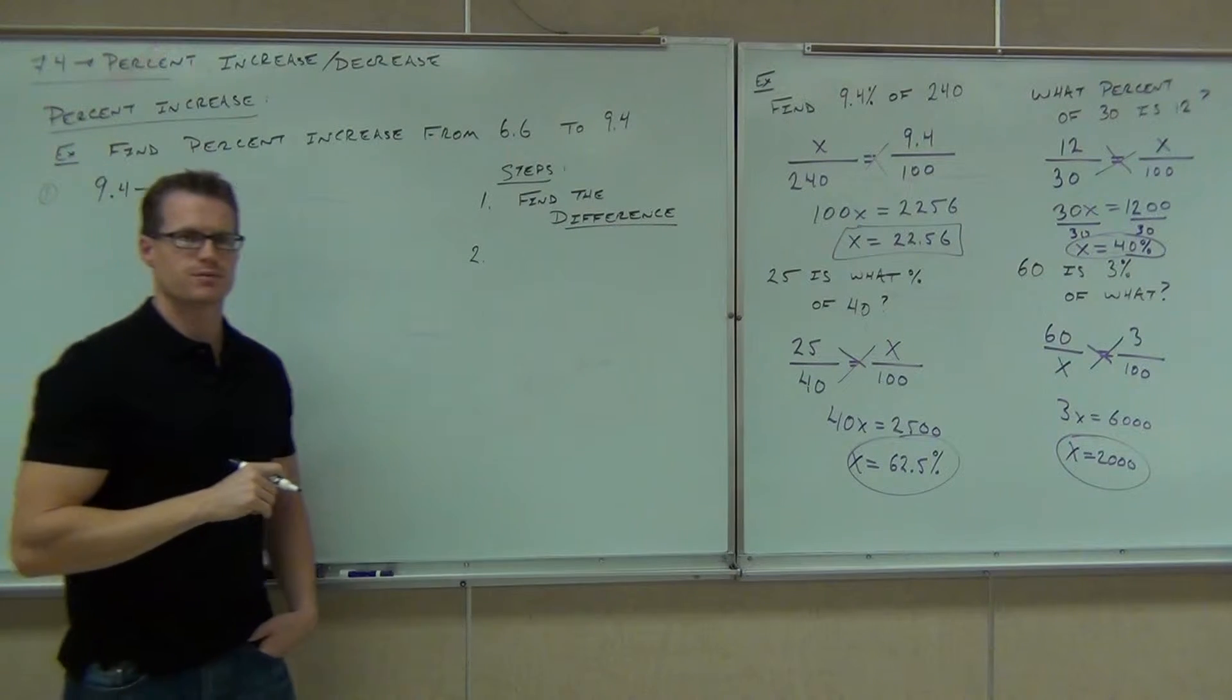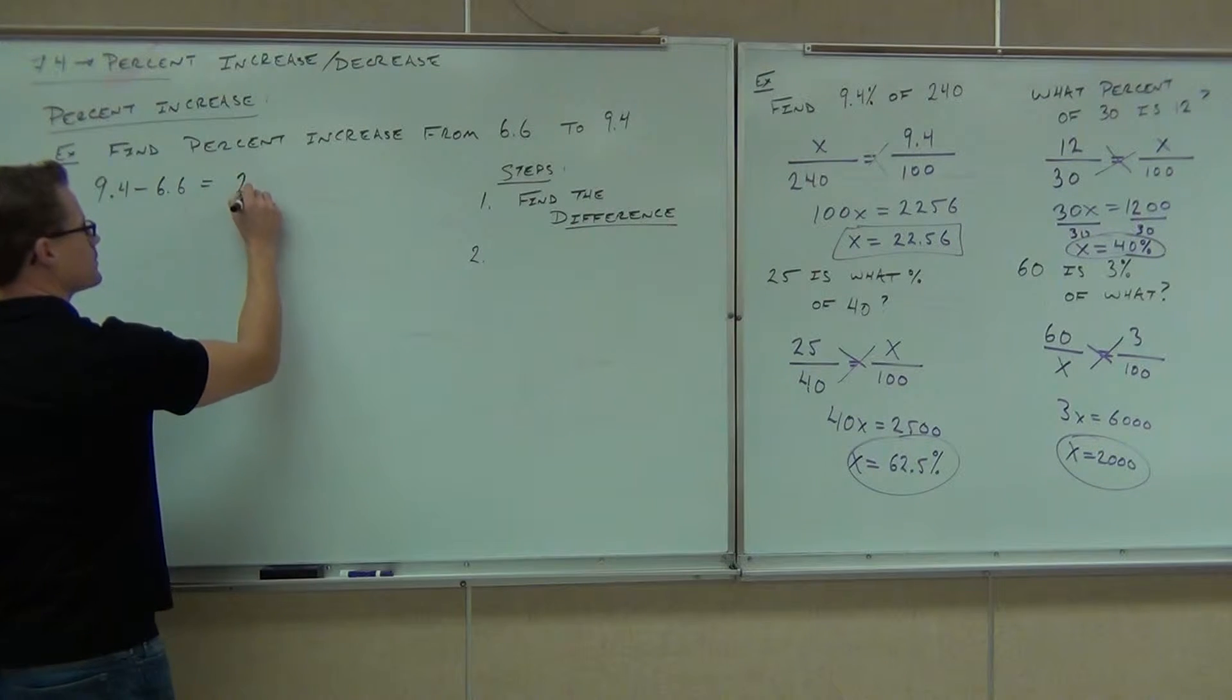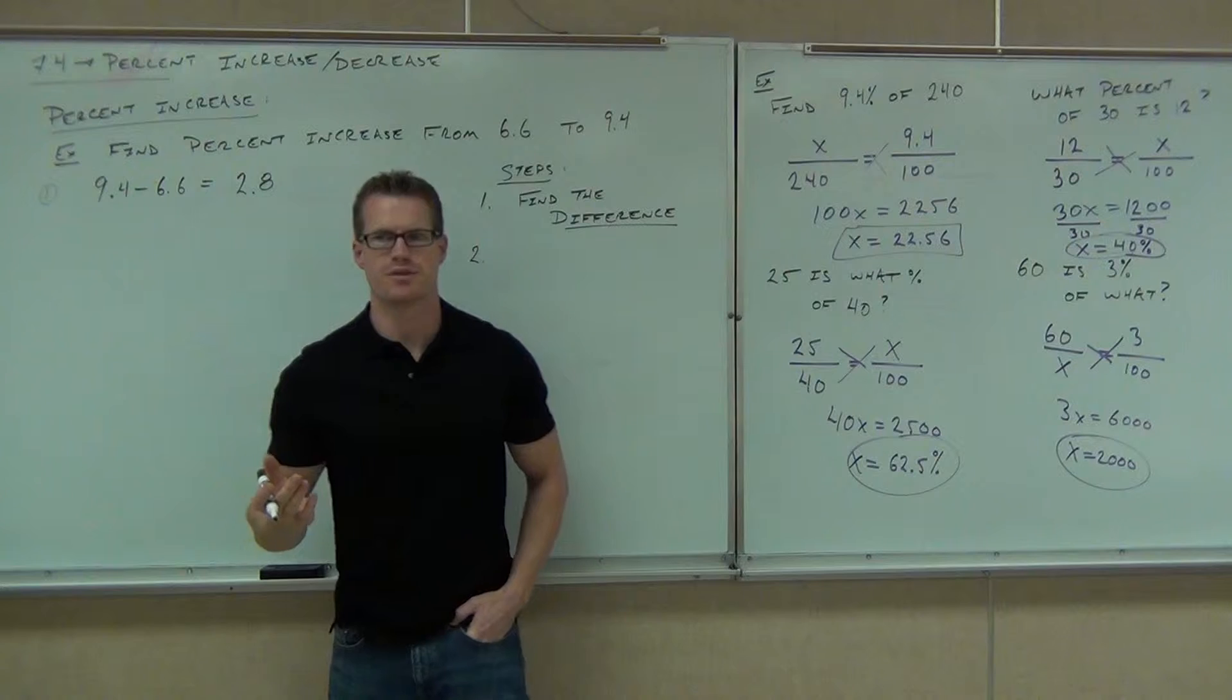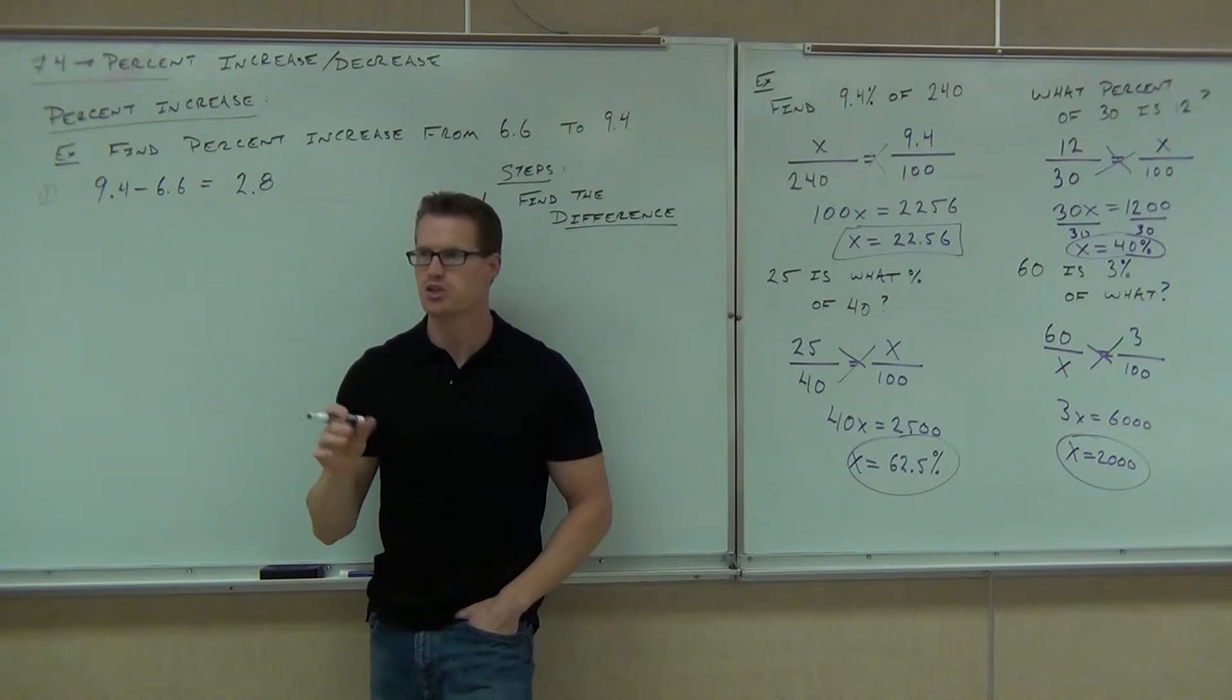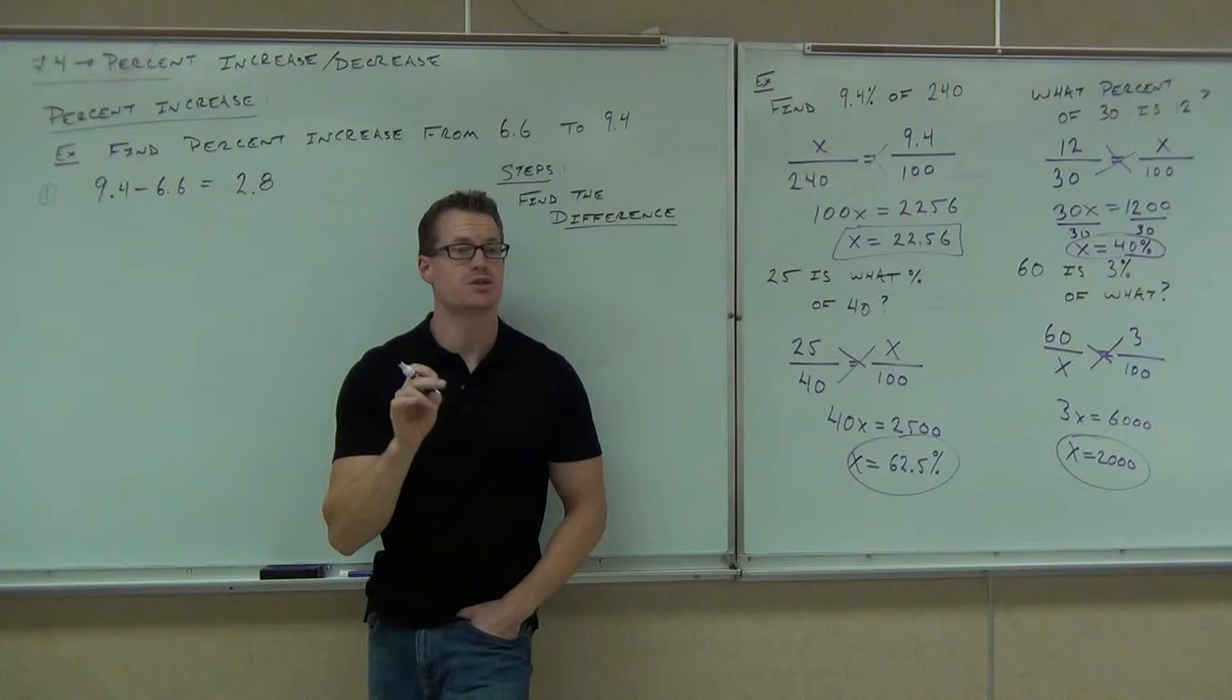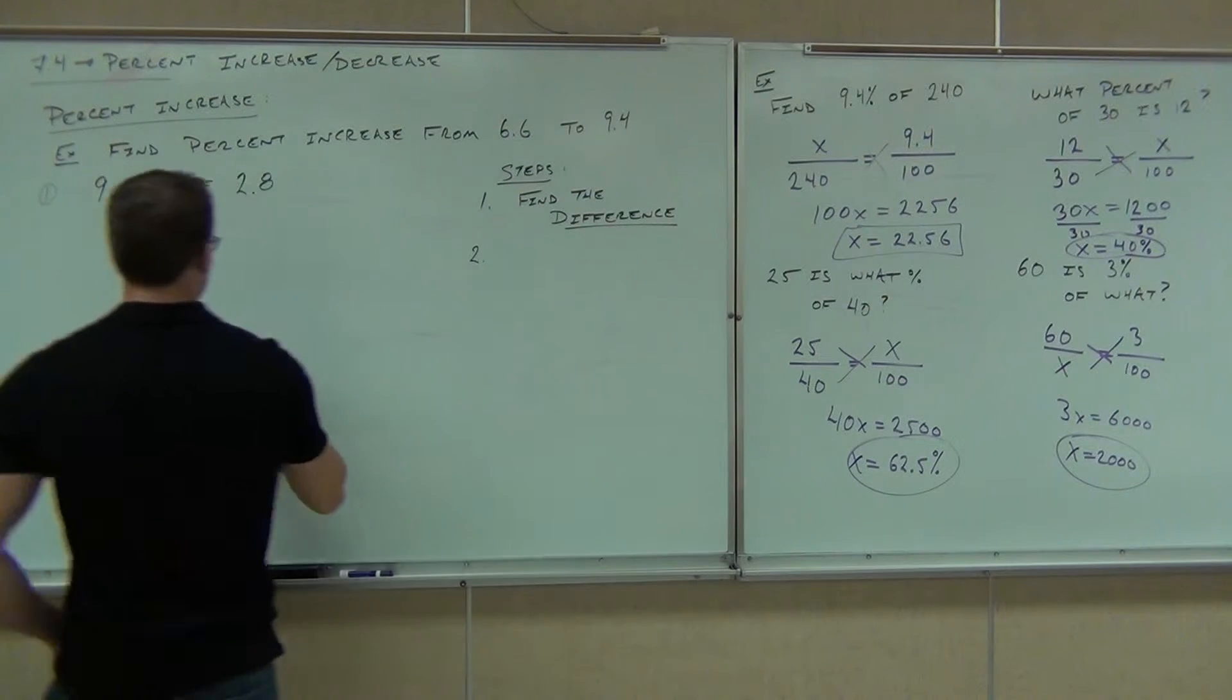Tell me what that is, 9.4 minus 6.6. Here's the interpretation for that: to get from 6.6 billion to 9.4 billion, we would have to increase 2.8 billion people. You follow? We're going to find that as a percentage, though, because we often think of percent gains.